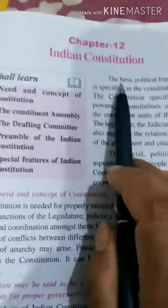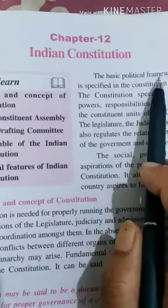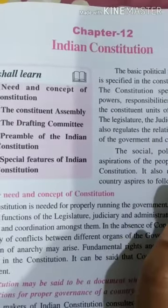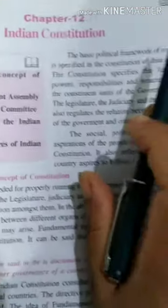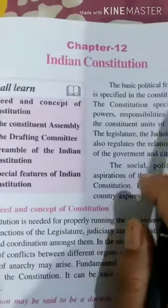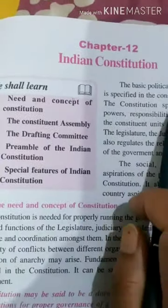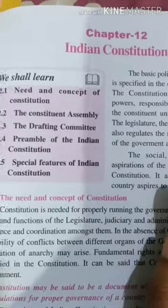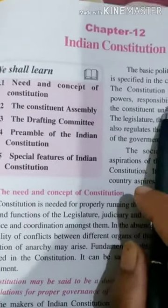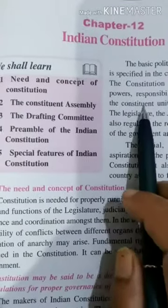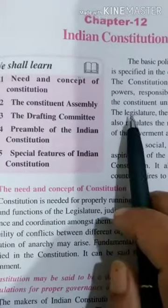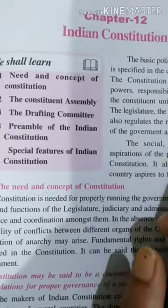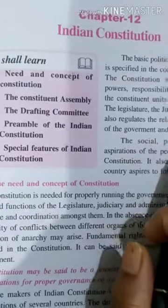The basic political framework of a country is specified in the Constitution of that country. The Constitution specifies the functions, powers, responsibility and structure of a country. All the constituent units of the Government — that is Legislature, Judiciary and the Executive — are defined. It also regulates the relation between the organs of the Government and Citizens.